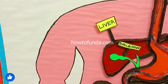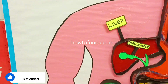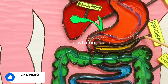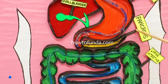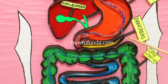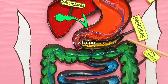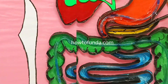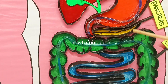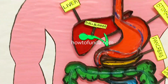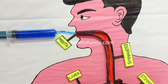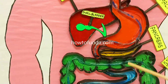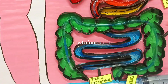We have another organ which is the pancreas. The pancreas produces the enzymes that break down proteins, fats, and carbohydrates. This is how the various organs in the digestive system work together.